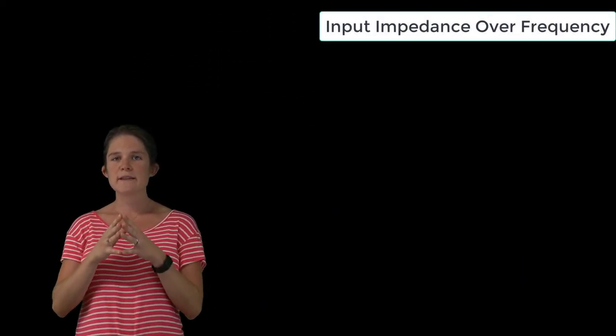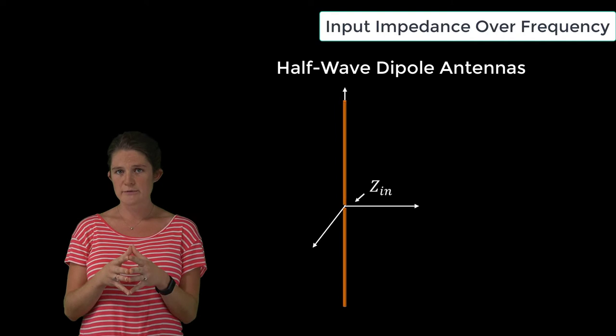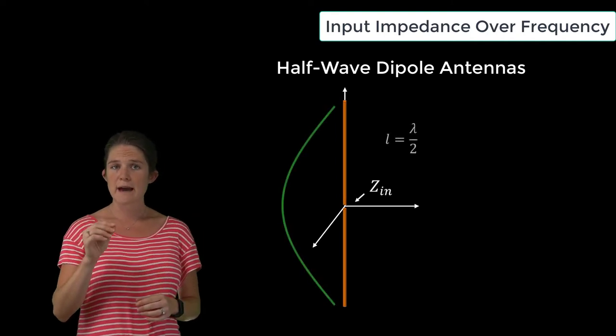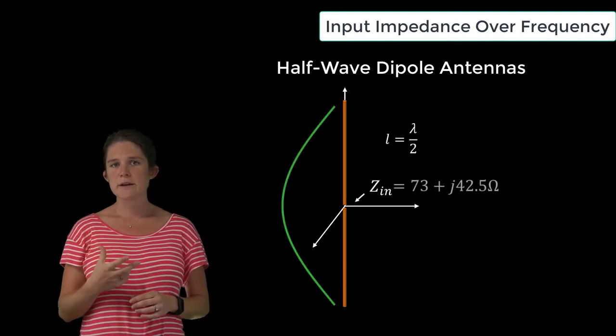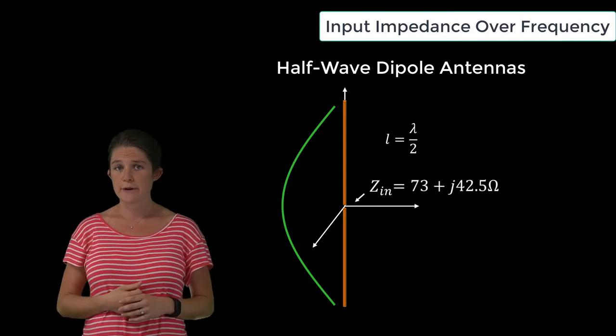In the previous module, we stated that the input impedance of a half-wave dipole, if it's driven at its design frequency, is equal to 73 plus j42.5 ohms.